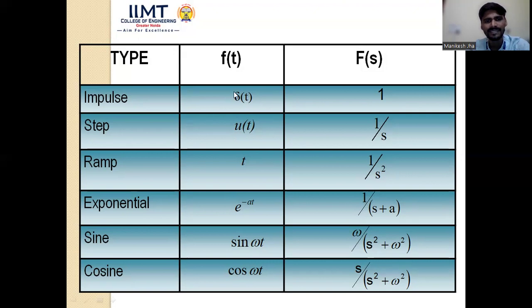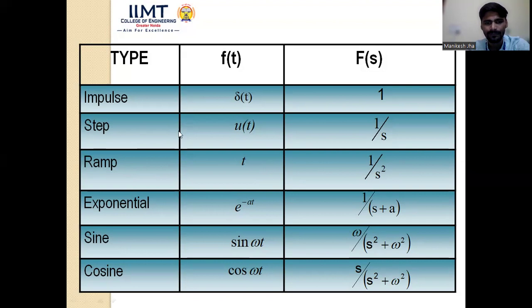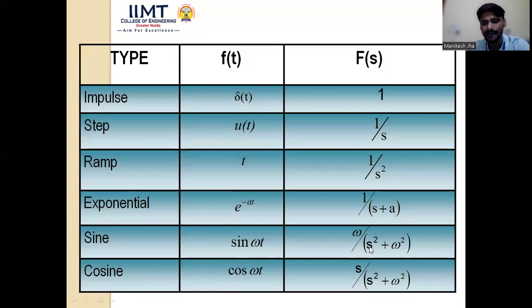The impulse signal δ(t) has Laplace transform 1. The unit step u(t) has Laplace transform 1/s. The unit ramp r(t) = t·u(t) has Laplace transform 1/s². The exponential e^(−at) has Laplace transform 1/(s+a). For sin(ωt), the Laplace transform is ω/(s²+ω²). For cos(ωt), it is s/(s²+ω²).